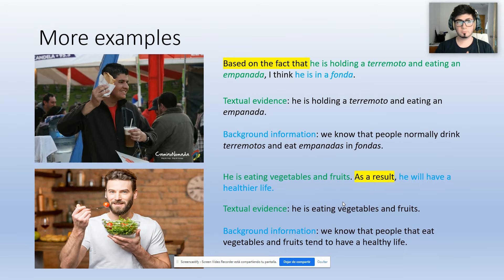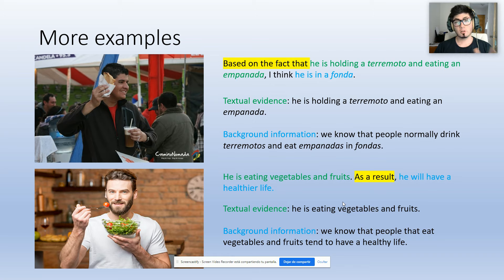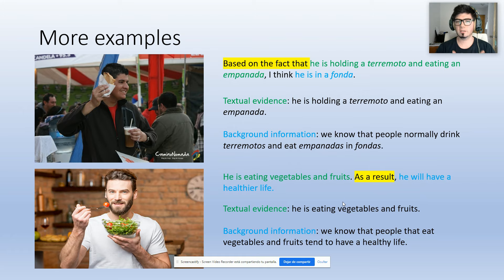Now, to show you more examples, please pay attention to these two pictures. In the first one, my inference was: based on the fact that he is holding a terremoto and eating an empanada, I think he is in a fonda. My textual evidence is that he is holding a terremoto and eating an empanada — it's a fact, something we can see in the picture. Our background information is that we know people normally drink terremotos and eat empanadas at a fonda. I used the phrase 'based on the fact that' to give a reason.